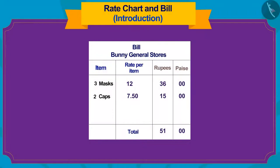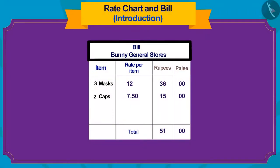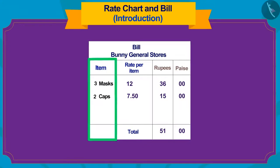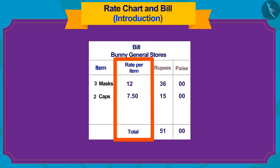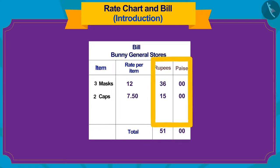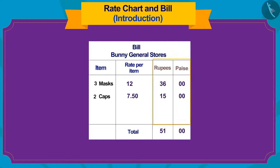What do you see in a bill? The shop name is written at the top. The list of purchased goods is written here, along with the rate per item. The total cost of each item is written in rupees and paise. And at the end is the total price of all the purchased items.